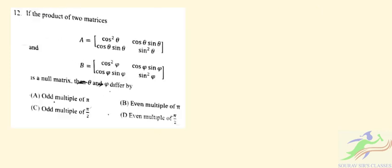Question number 12: if the product of two matrices A and B is given as a null matrix, then theta and phi differ by — so we need to find which one of the options is correct. We multiply the two matrices; the product is given.